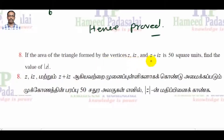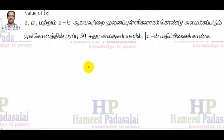The vertices Z, Iz, and Z+Iz form a triangle with an area of 50 square units. That is why we are going to draw the triangle.